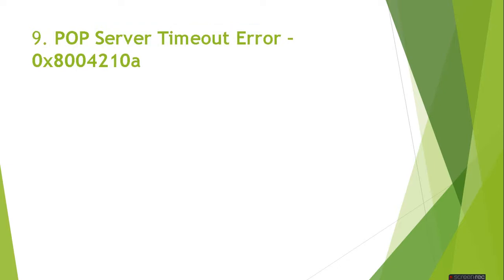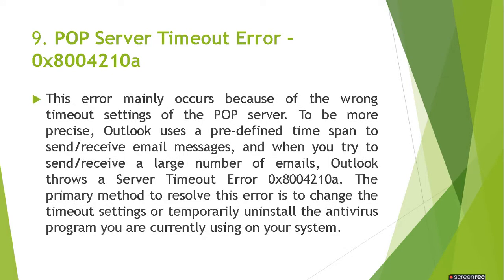Our ninth error is the POP server timeout error. The code for this error is 0x8004210a. This error mainly occurs because of wrong timeout settings of the POP server. Outlook uses a predefined time span to send or receive email messages, and when you try to send or receive a large number of emails, Outlook throws a server timeout error.